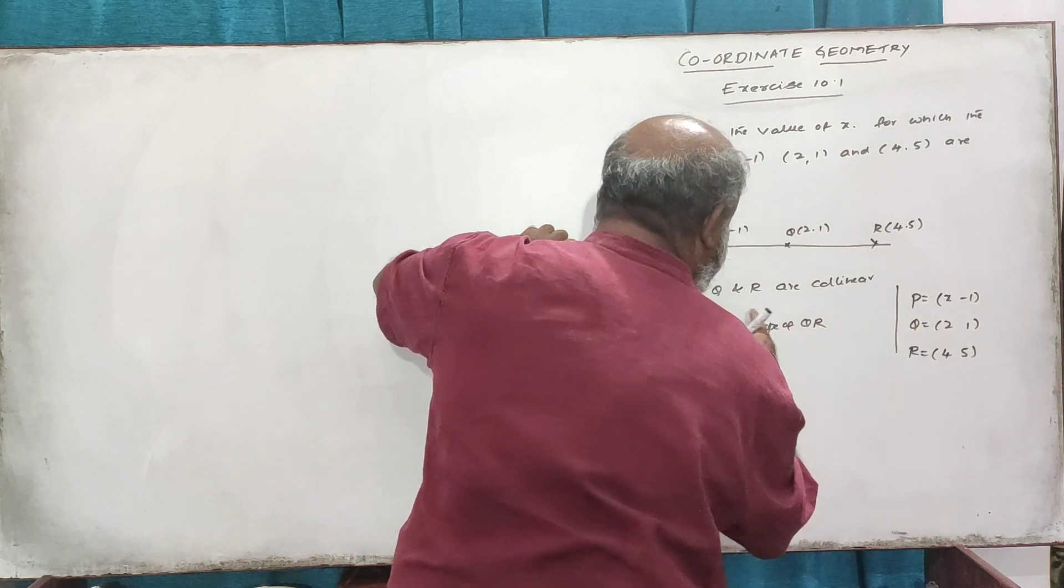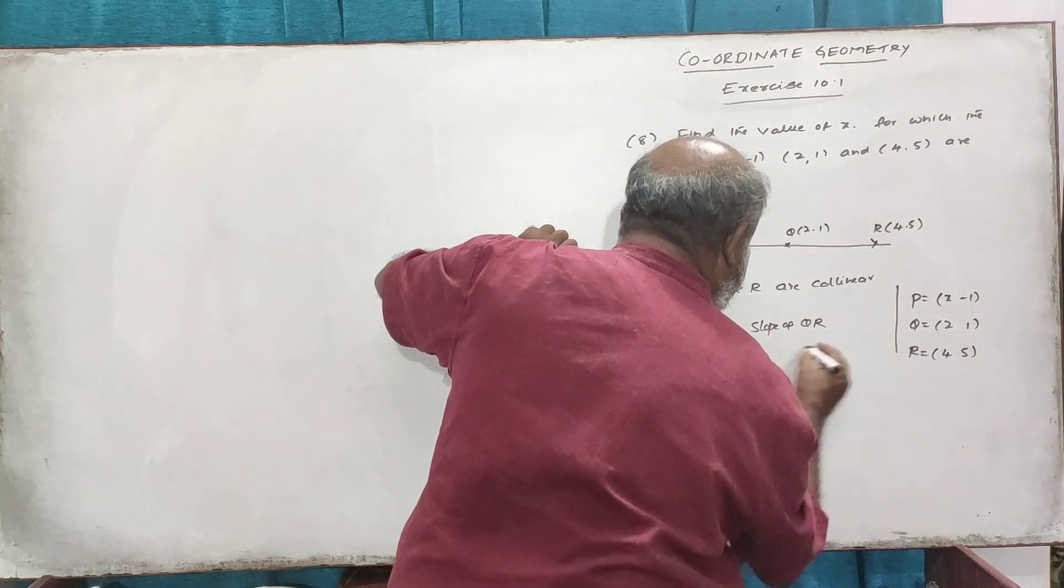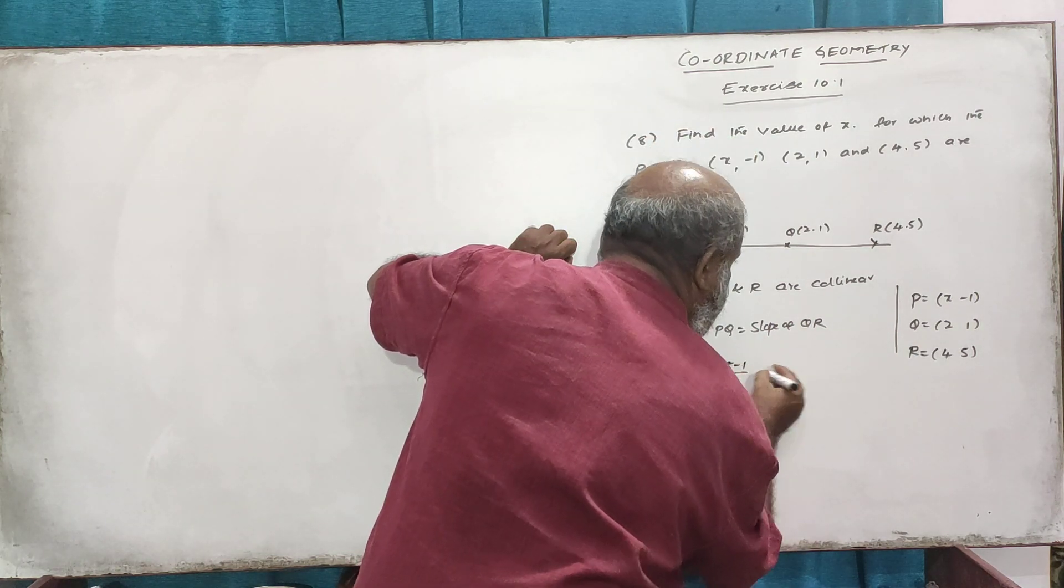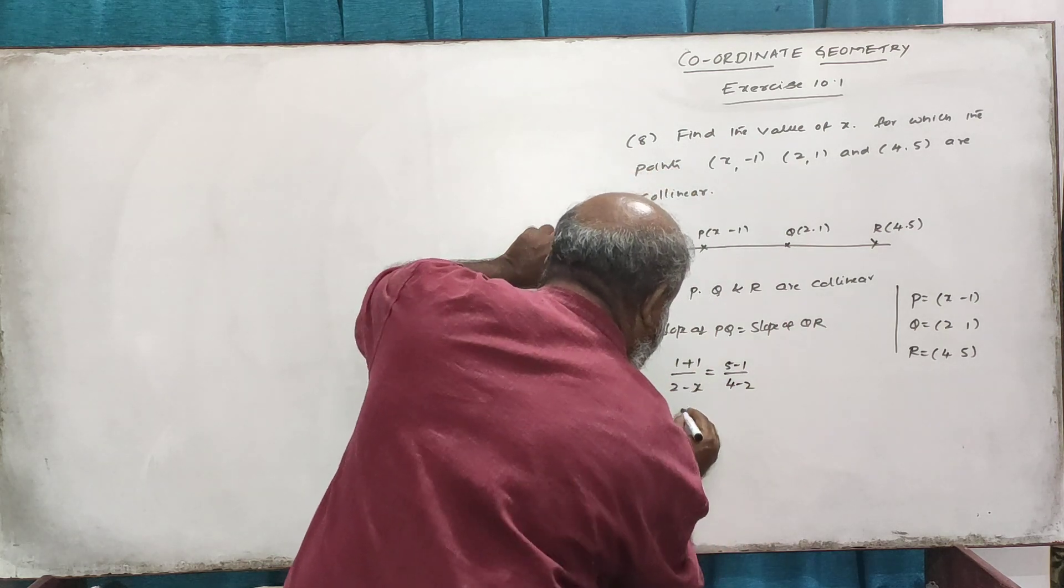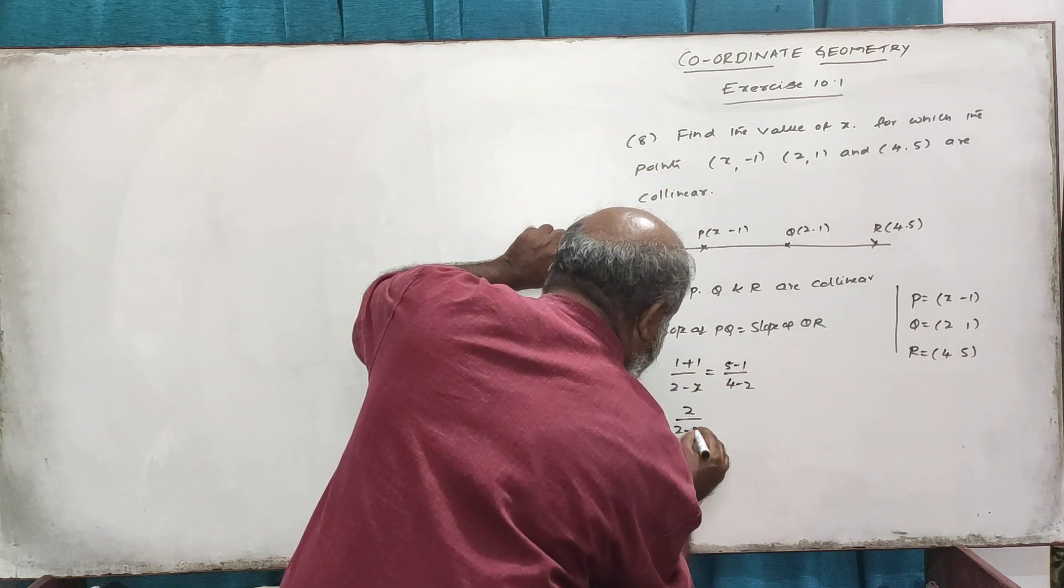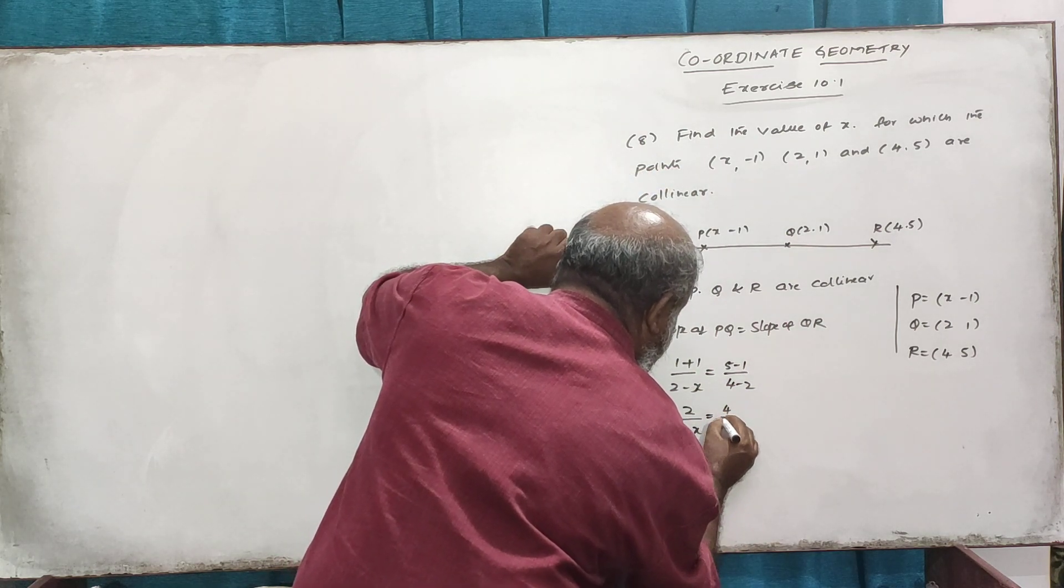The slope of QR is 5 minus 1 divided by 4 minus 2. So the equation becomes 2 over 2 minus x equals 4 over 2.